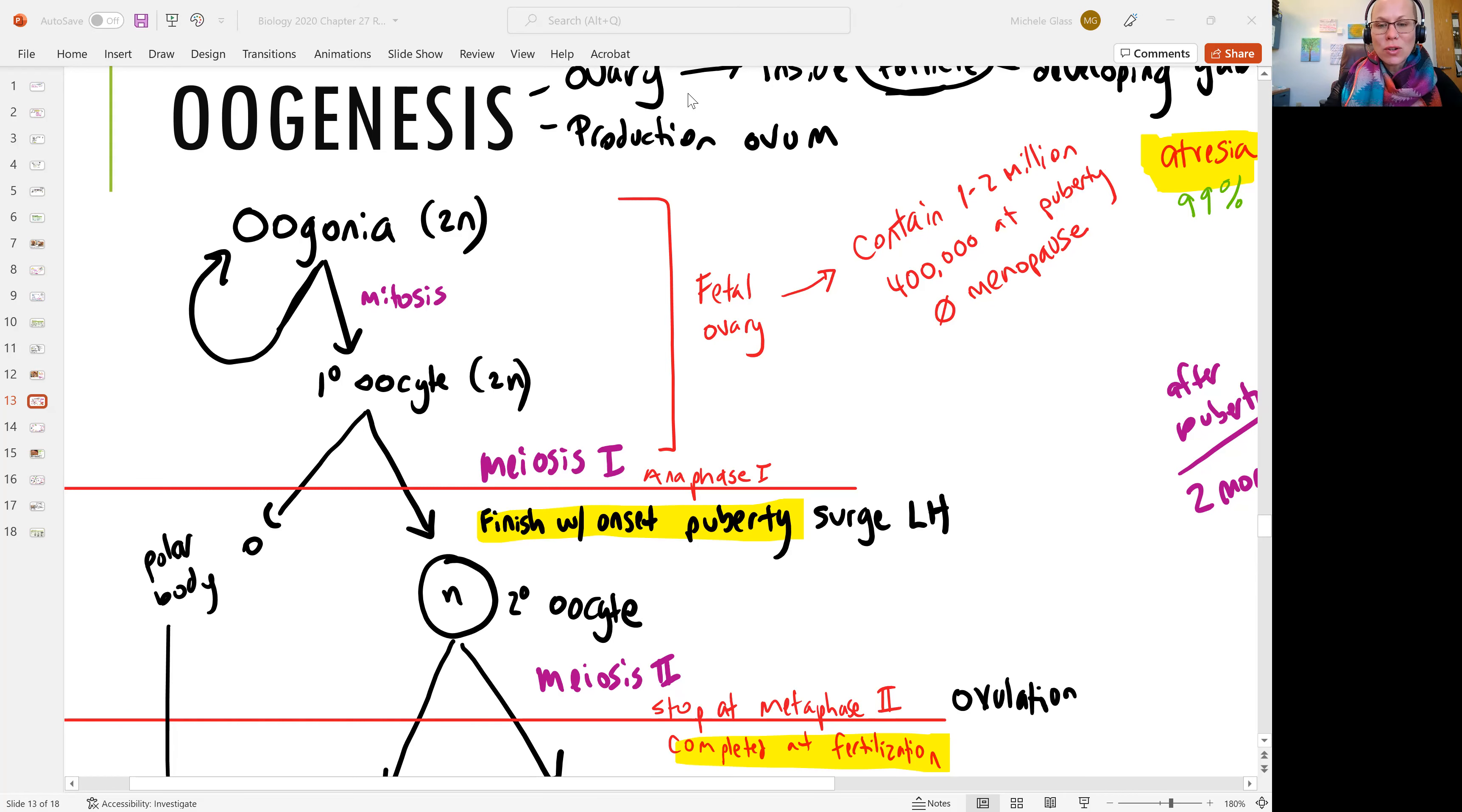So when you are taking your whole page of notes on oogenesis, we will talk about what's happening during meiosis one. And I'll say, during meiosis one, the process is frozen during anaphase one. And that's where the mistake comes in. Make sure you are saying the process is frozen during prophase one.